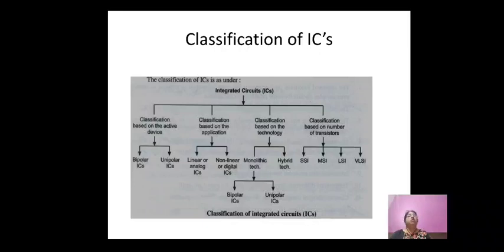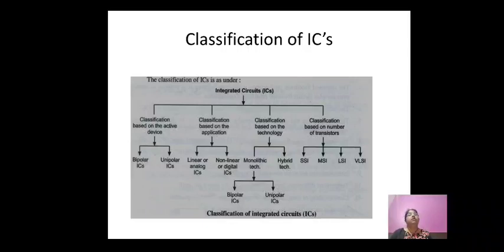Second, classification based on application: linear or analog ICs, and digital or non-linear ICs, depending on whether the IC is used for analog or digital applications. Third, classification based on technology: monolithic technology or hybrid technology used for fabrication. In monolithic ICs, there are again two types — bipolar ICs and unipolar ICs.